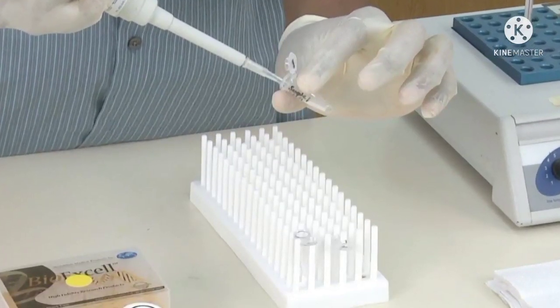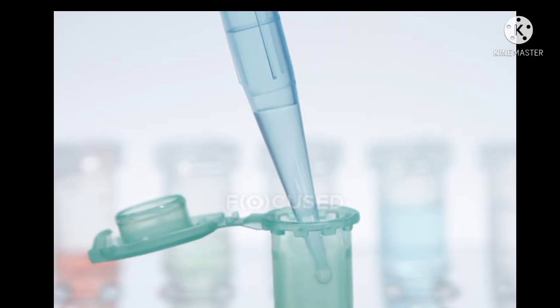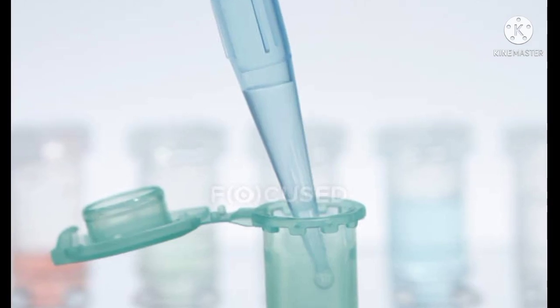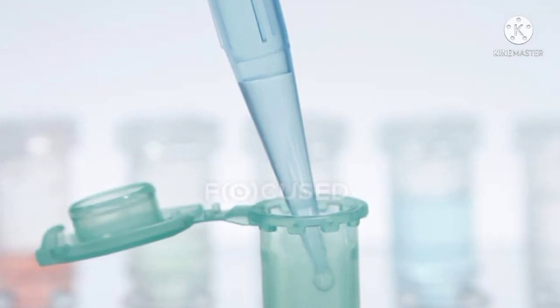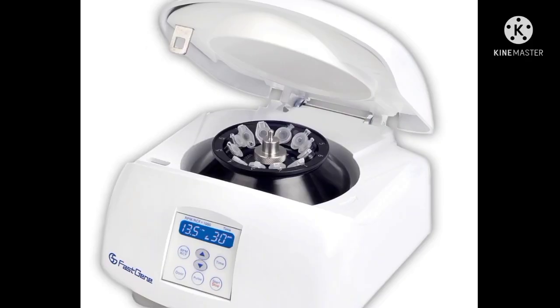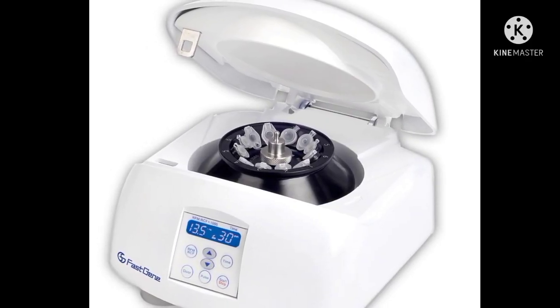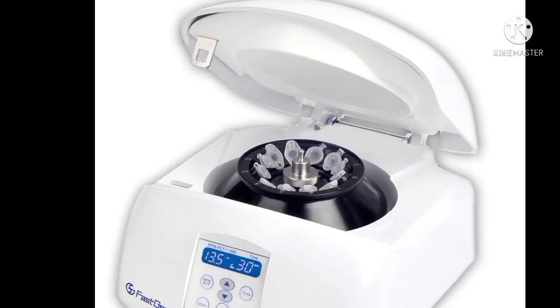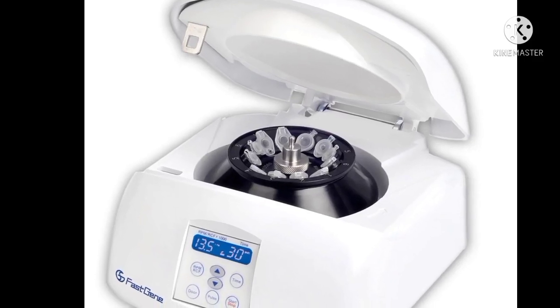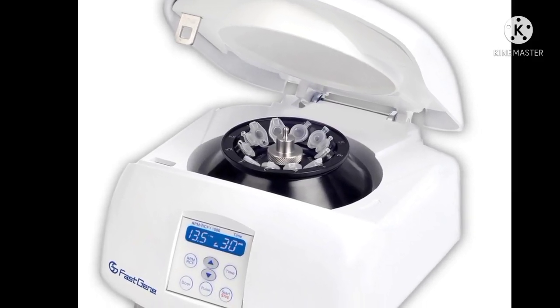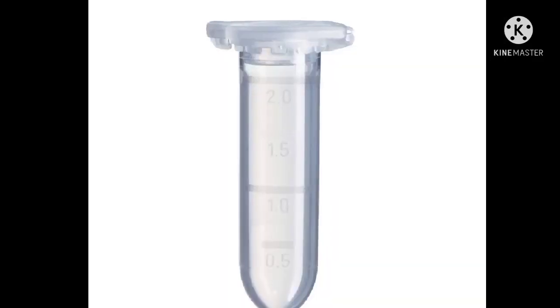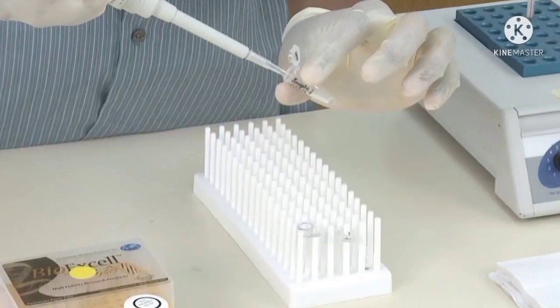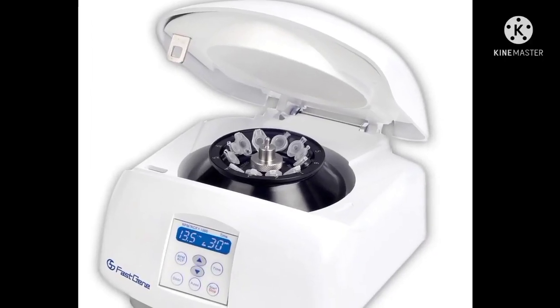Transfer the supernatant into a clean collection tube. Shake solution C4 before use. Add 200 microliters of solution C4 to the supernatant and vortex for 5 seconds. Load approximately 675 microliters onto a spin filter and centrifuge at 10,000 rpm for 1 minute. Discard the flow through. Add 500 microliters of solution C5 and centrifuge. Discard the flow through and centrifuge to remove residual C5. Place spin filter in a clean 2 ml collection tube. Add 100 microliters of solution C6 to the white filter membrane and centrifuge to elute the DNA.